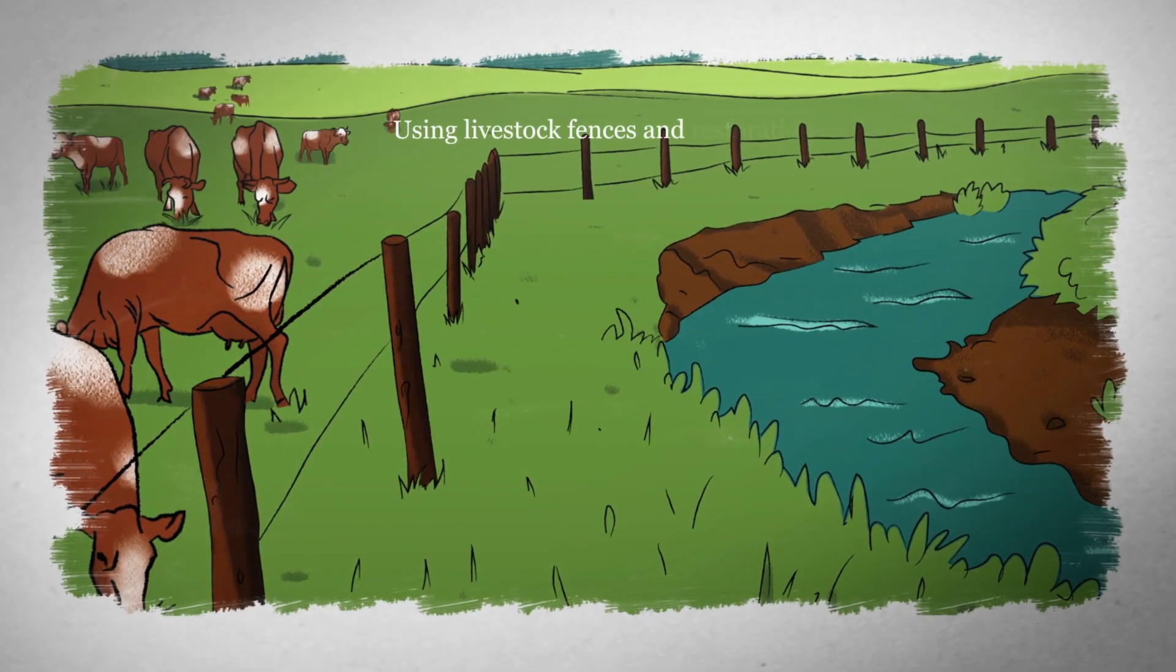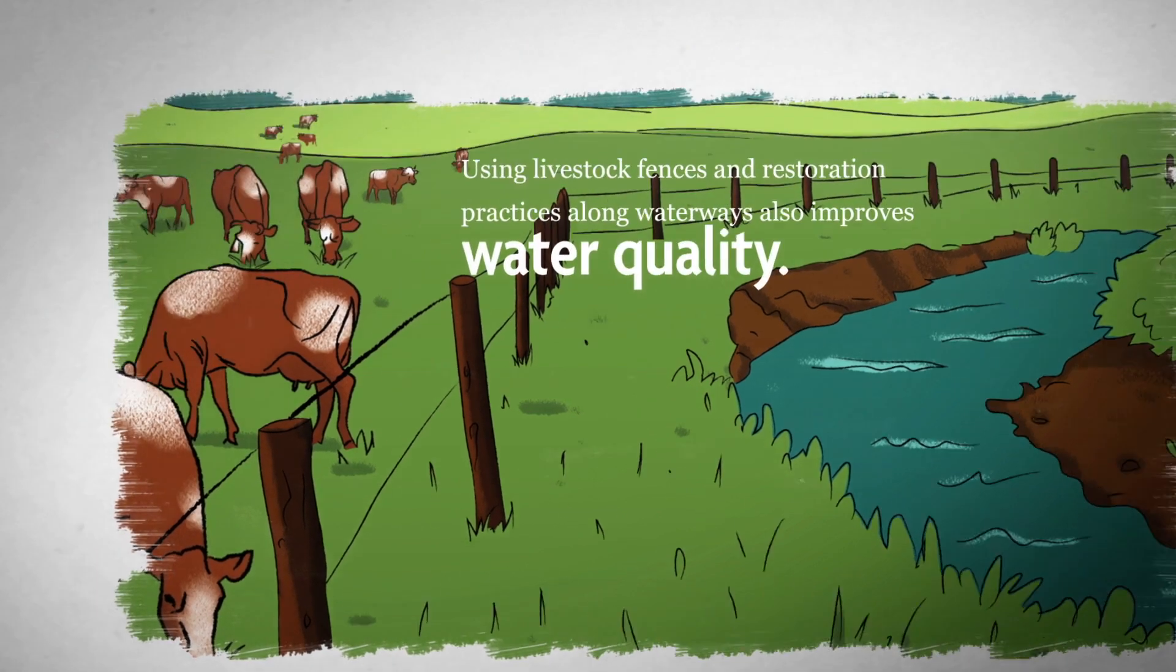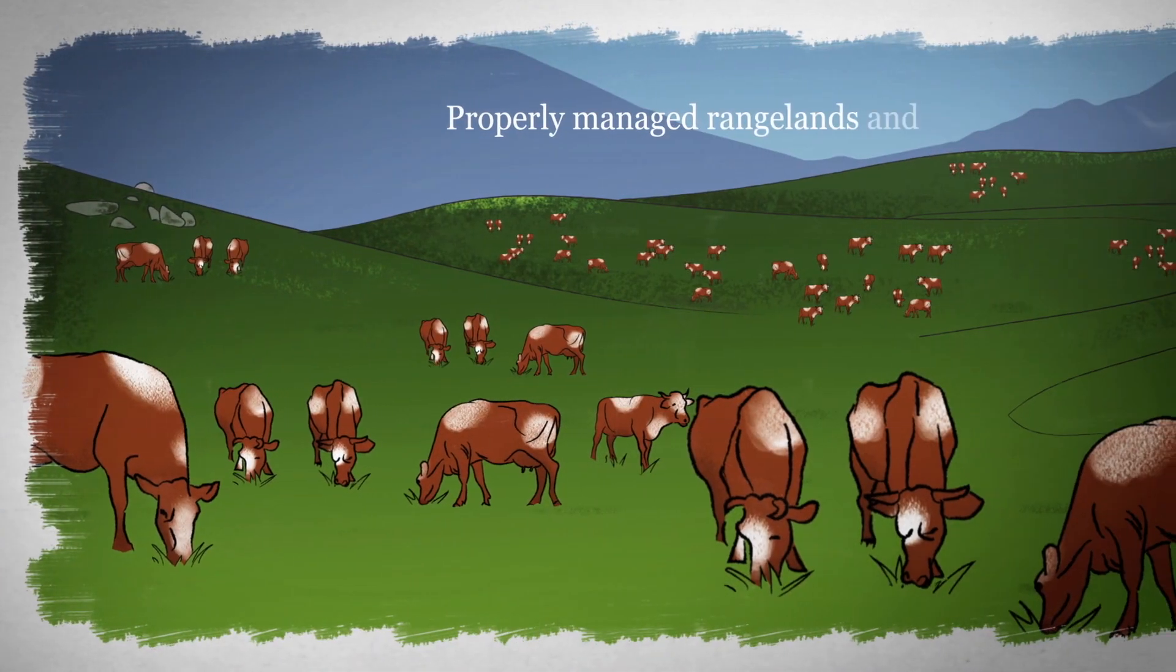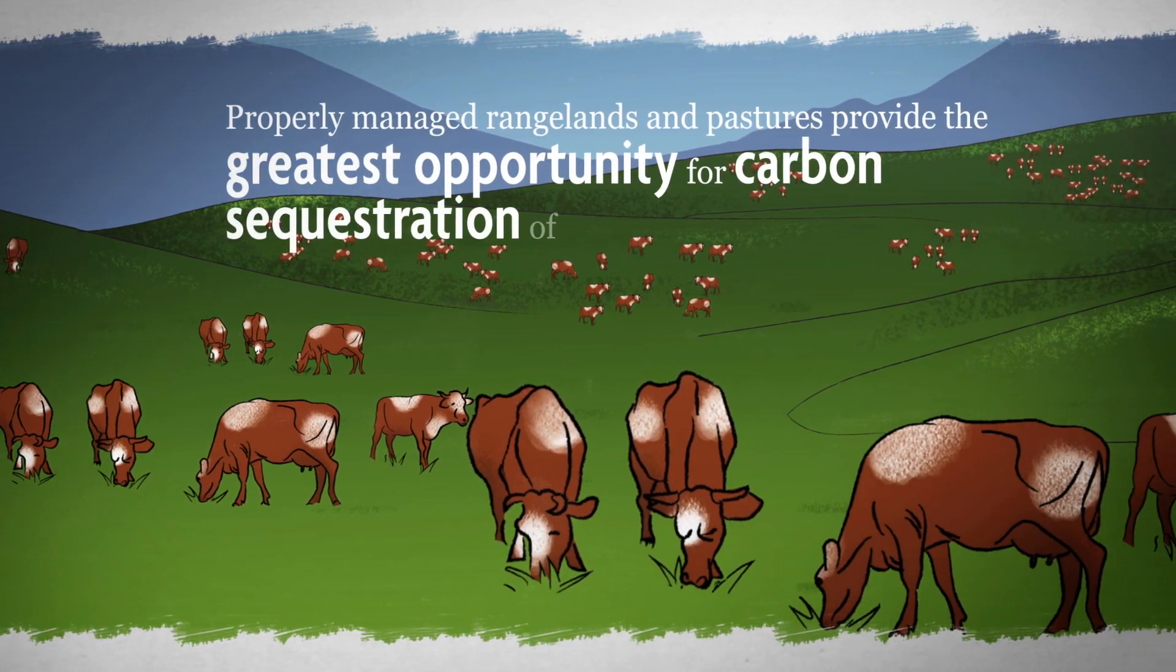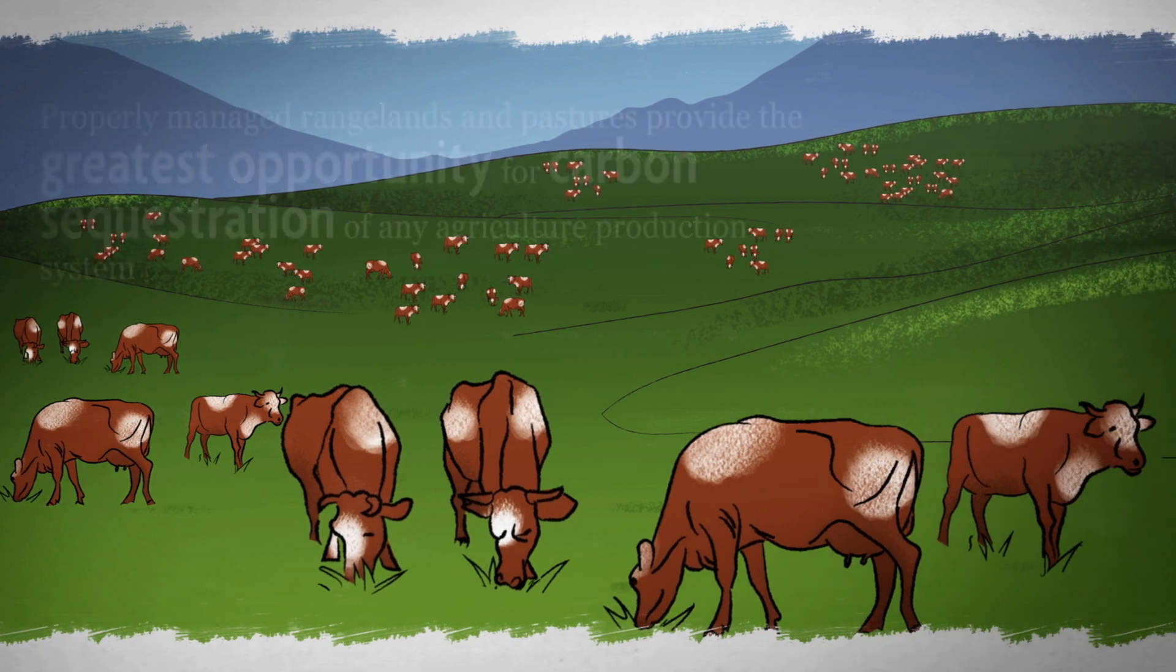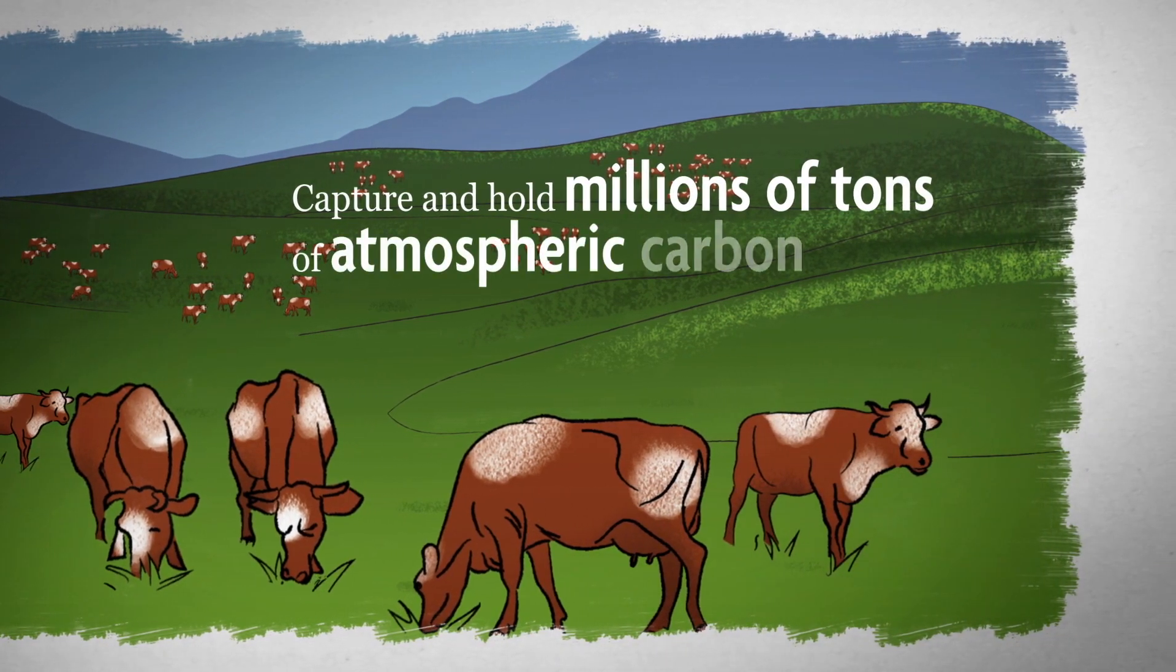Using livestock fences and restoration practices along waterways also improves water quality. Properly managed rangelands and pastures provide the greatest opportunity for carbon sequestration of any agricultural production system. They have the potential to capture and hold millions of tons of atmospheric carbon.